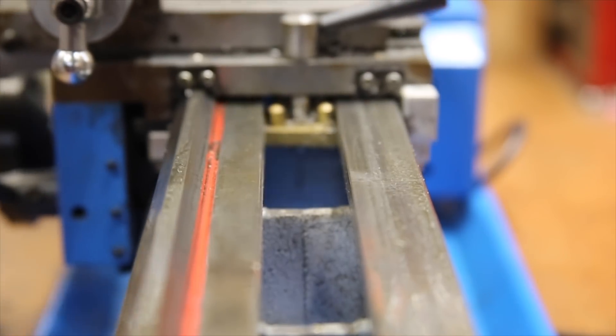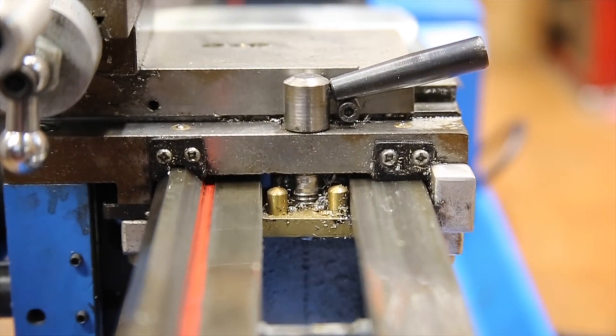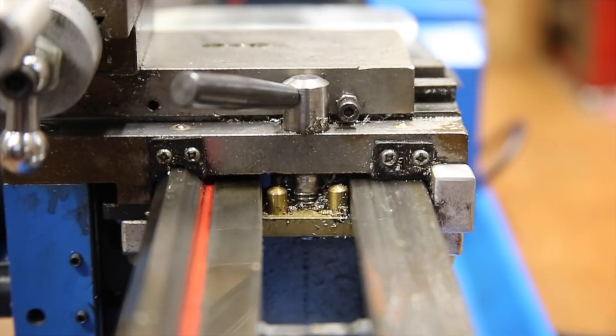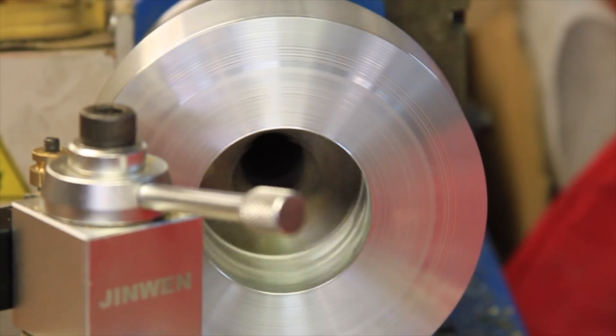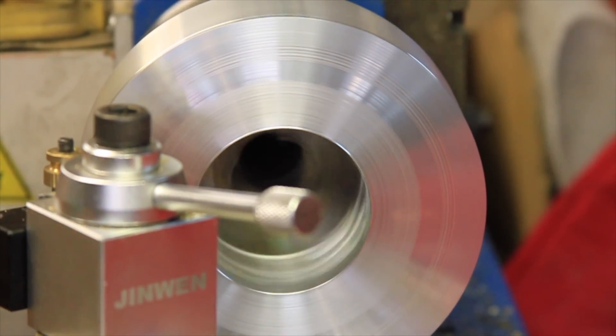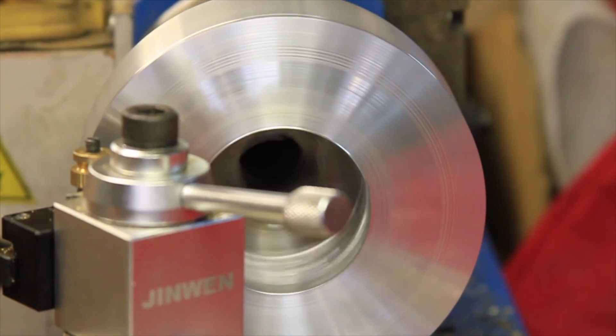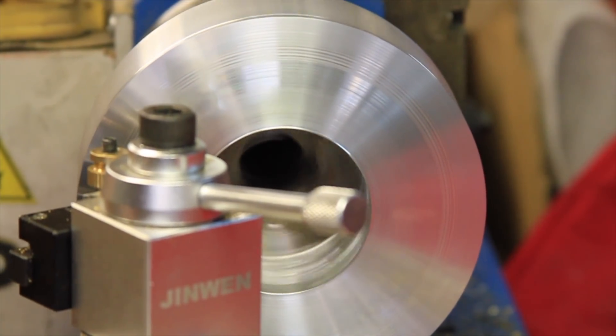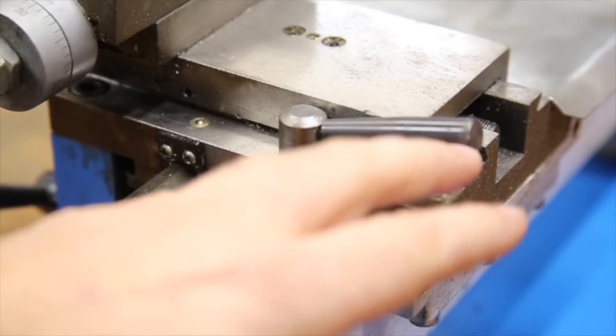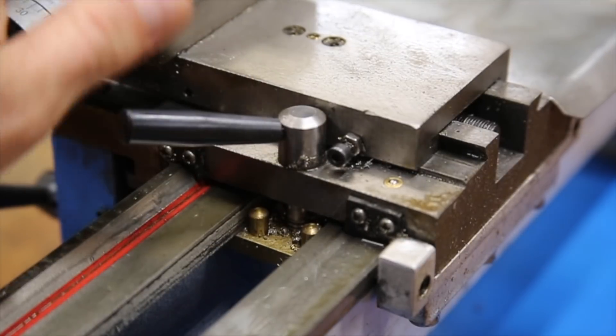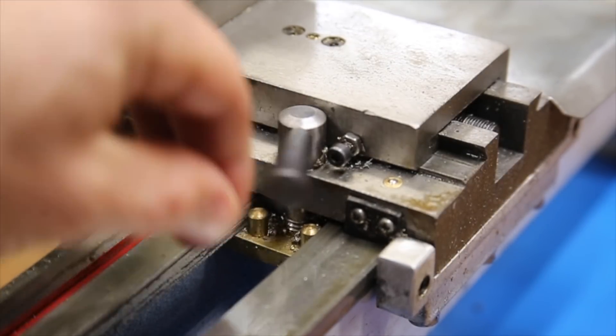Next up is the carriage lock. This was a pretty simple project that I made more complicated than it needed to be, but works really well. I found that I was struggling to get smooth facing cuts because the carriage was moving back and forth. Lack of rigidity aside, this took a lot of unwanted movement away, and after installing this lock, my facing cuts have become consistently very smooth.